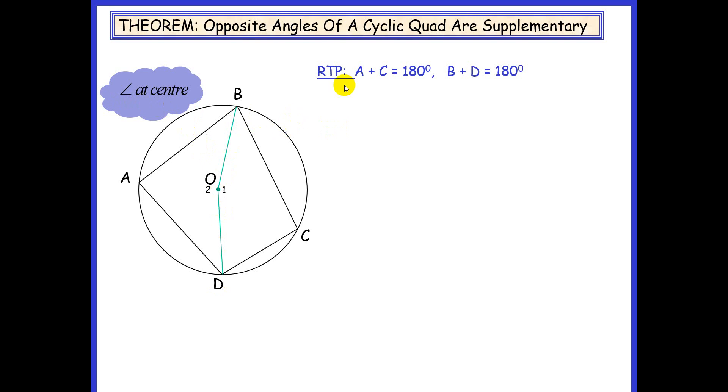Now remember, if we're trying to prove A plus C equals 180, we will join BO and DO. If we're trying to prove B plus D equals 180, then we will join AO and CO. So let's move to our proof.